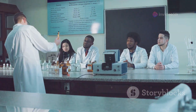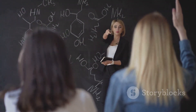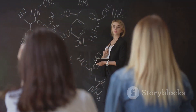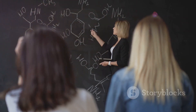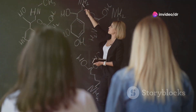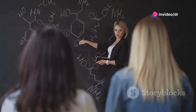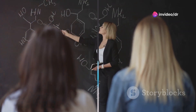Here's the crucial difference: valency is about bonding, while oxidation state is about charge. Valency tells us how atoms bond, while oxidation state tells us how atoms behave when they're part of a compound.